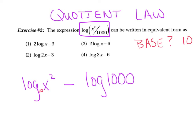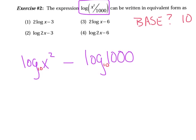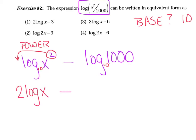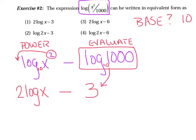What I have right now doesn't match any of the choices, so on the first term I'm now going to use the power law, which says the exponent can move and become the coefficient. I'll rewrite it as two times the log of x minus... and with the second term, since there are no variables, I'll evaluate it. Ten raised to what power equals 1,000? The power of three. So this entire term just became a three, and that matches choice number one.